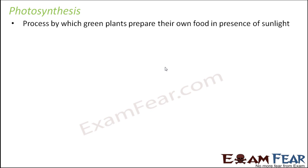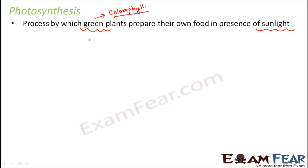Photosynthesis is the process by which green plants prepare their own food in presence of sunlight. Sunlight is very significant here, and the other most significant thing is green plants. For photosynthesis to happen, why do we only talk about green plants? Is it that only green plants can carry out photosynthesis? Yes, that is correct to some extent. These green plants have a specific pigment called chlorophyll, and due to the presence of this pigment these plants get their green color. Chlorophyll performs one of the most important roles in photosynthesis, so chlorophyll is very crucial for photosynthesis.